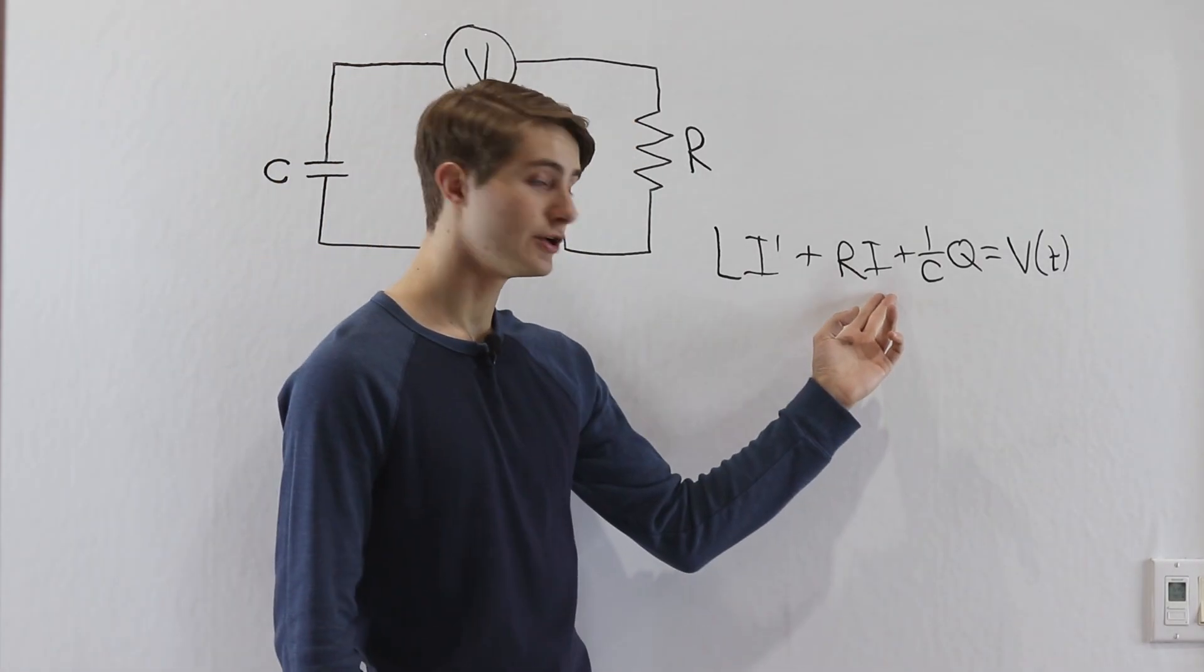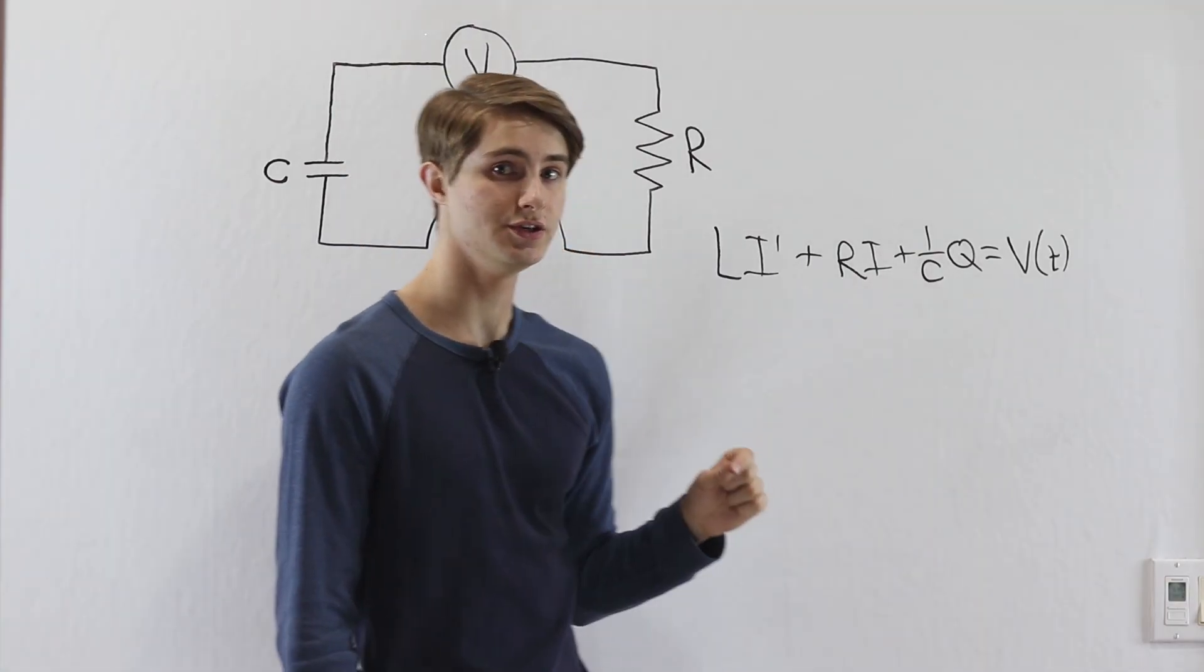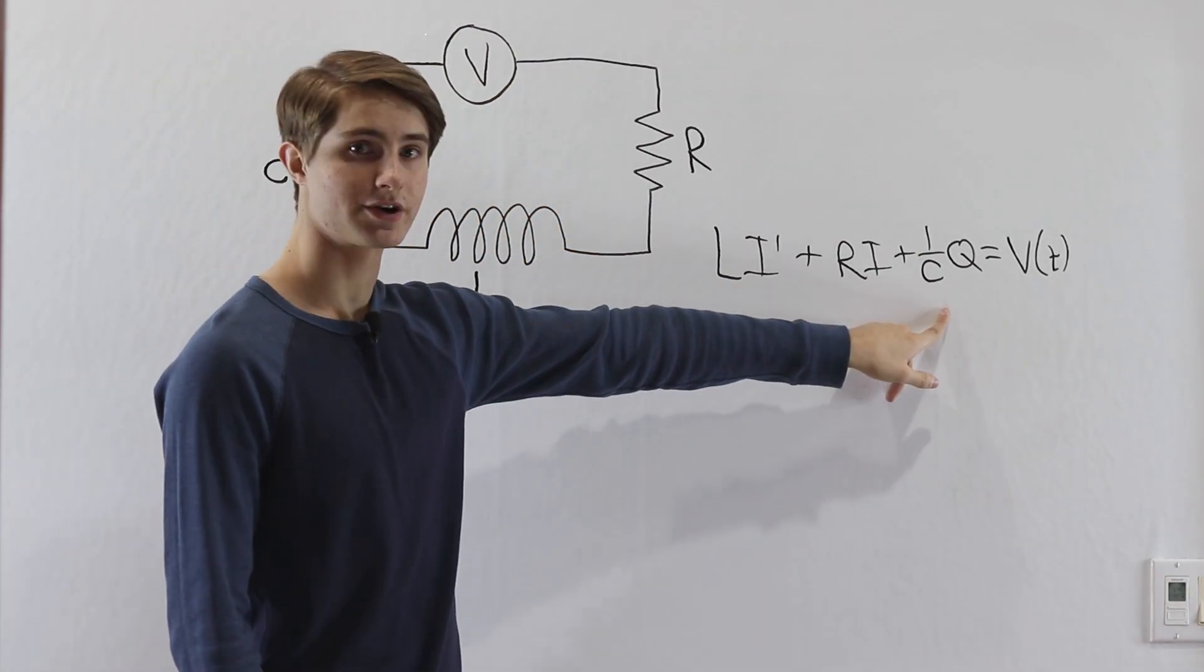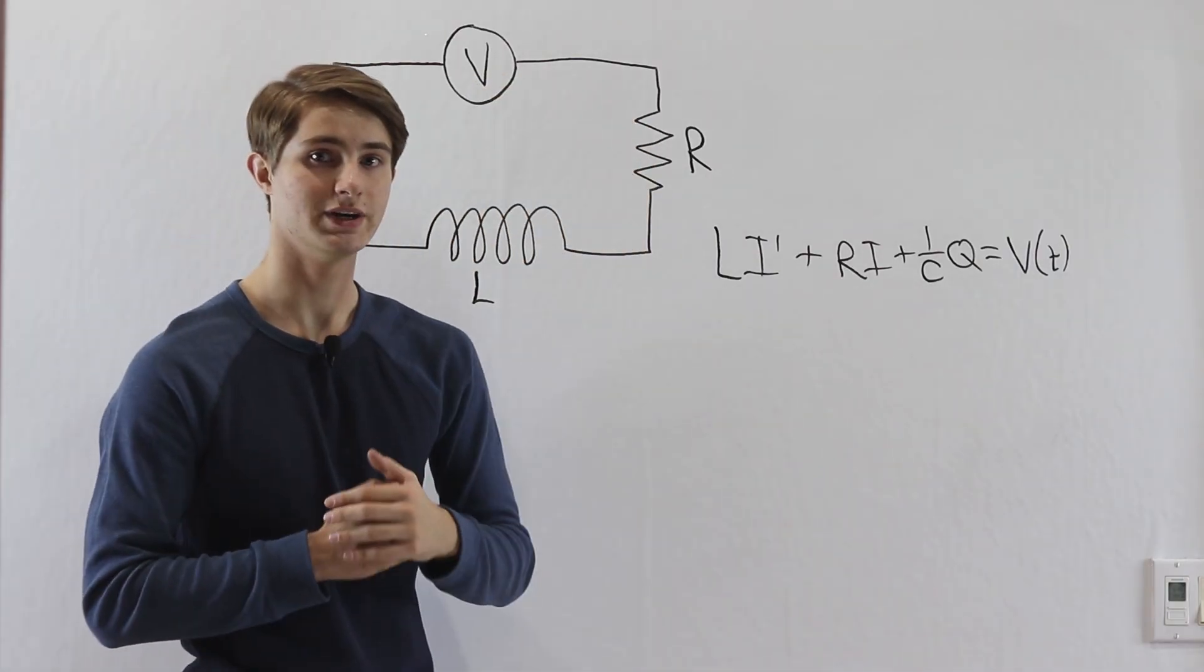The problem is we have current, which is I, and we also have charge, which is Q. L, R, and C are constants, but we have two different functions that we're trying to solve for, which is a little bit strange.